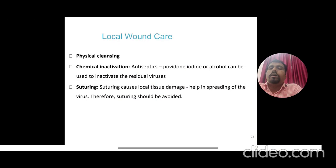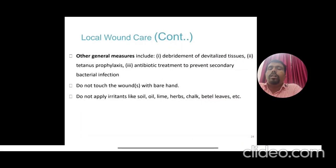For Category 3, wound management should be done, rabies immunoglobulin must be applied to the wound surface, rabies vaccine must be given, and the dog observed for a minimum of 10 days. Local wound care includes physical cleansing, chemical inactivation using antiseptics such as povidone-iodine or alcohol to inactivate residual virus. Suturing is not recommended at the dog bite site because it will enhance entry of the virus into nervous tissue. Do not touch the wound with bare hands, and do not apply irritants like soil, oil, lime, herbs, chalk, or betel leaves, which are common village customs.